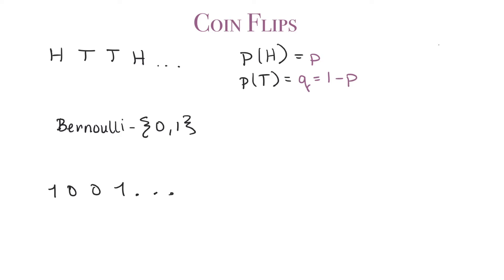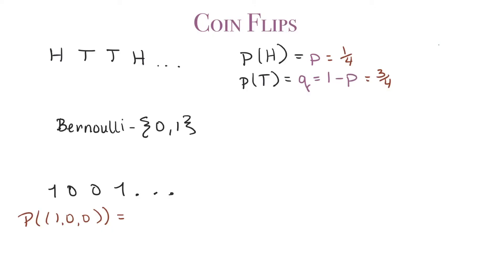What's the probability of various sequences? Let's use an unfair coin: say the probability of heads is 1/4, meaning the probability of tails is 3/4. What is the probability of the sequence 1, 0, 0 — one head followed by two tails? We're going to assume these coin flips are independent. Intuitively, whatever happens on the first flip doesn't affect the second — the probability of heads is still the same. So the probability of sequence 1, 0, 0 is 1/4 times 3/4 times 3/4.